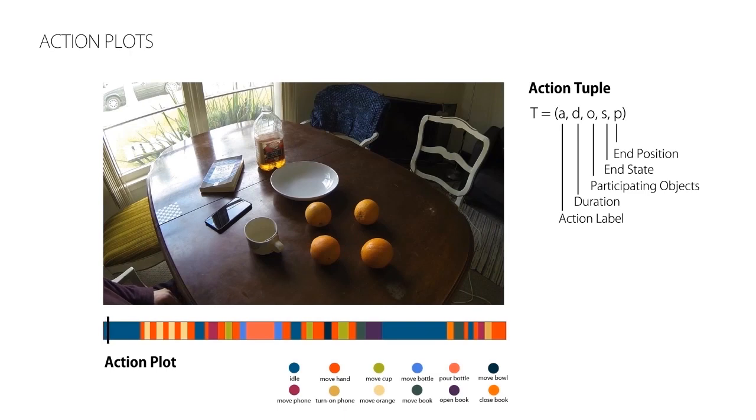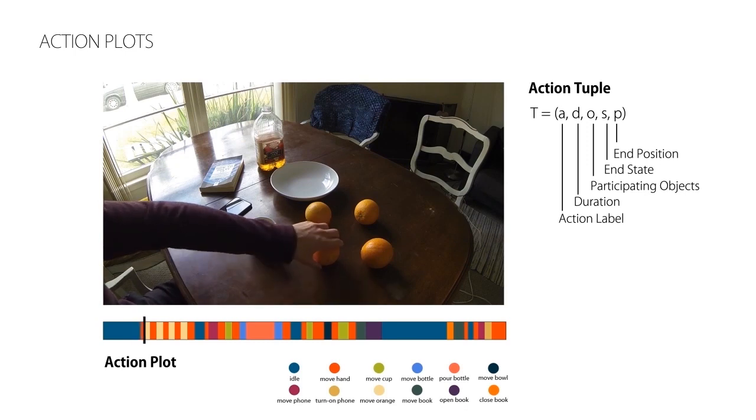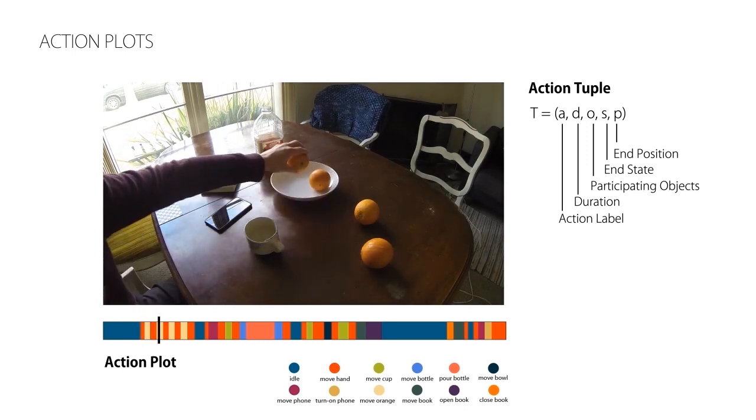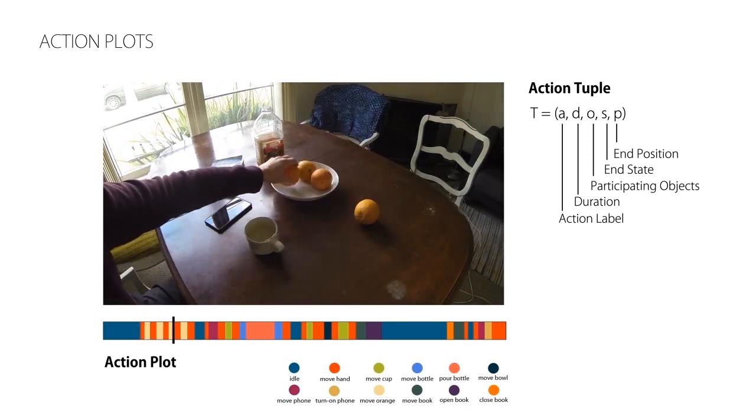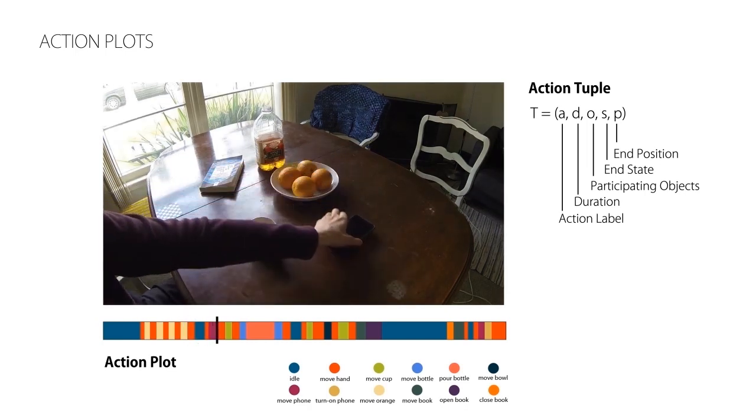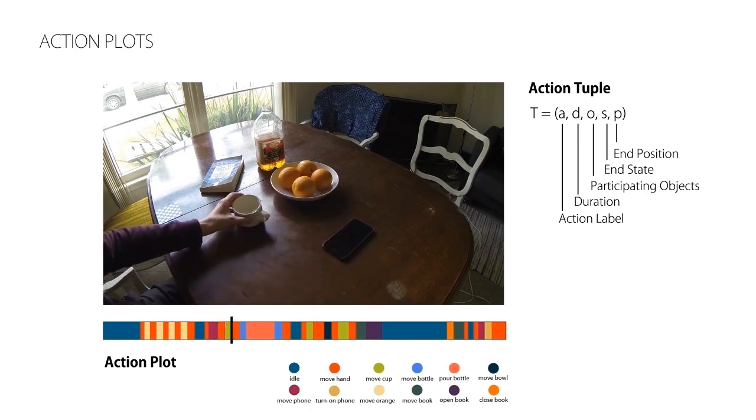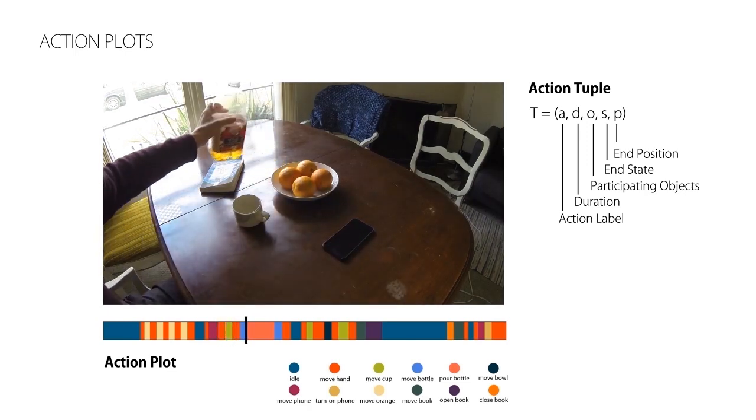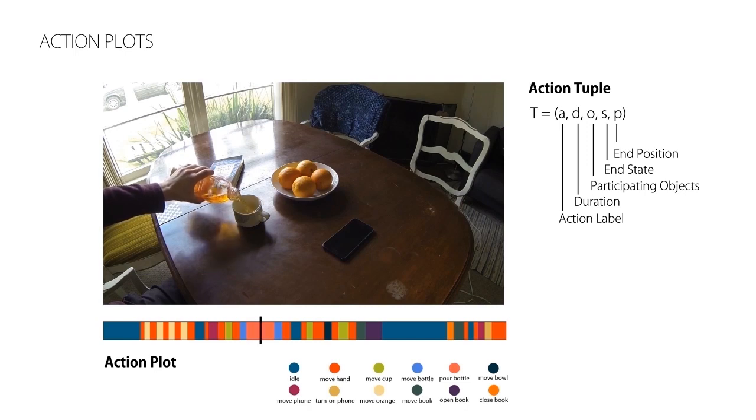We introduce a novel representation for interaction, the so-called action plots that encode interactions as a set of discrete actions. Each action in the action plot can be seen as a keyframe capturing a unique phase of the interaction. This discretization allows us to focus on the combinatorial nature of human-object interactions while abstracting away the complexity of spatiotemporal transformations.